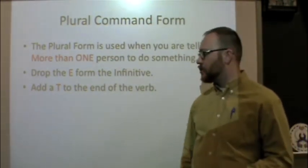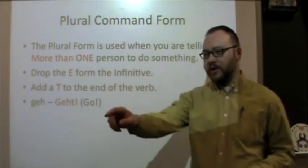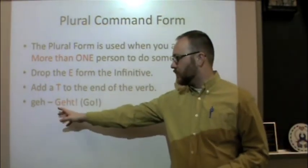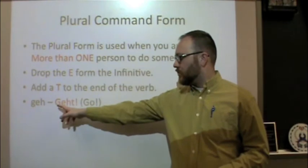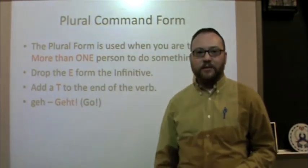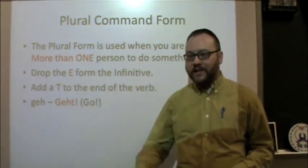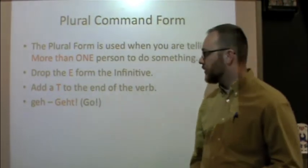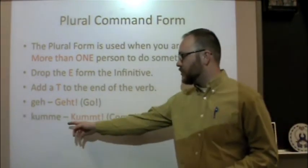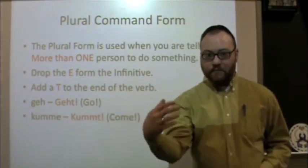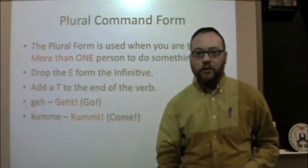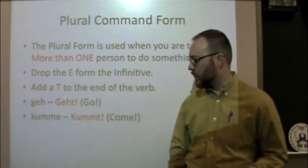So if we stick with those two same verbs, if we're telling three people to go, we take the verb, drop the E, add a T: 'gate.' Or let's use the verb 'kumme' — 'come.' Drop the E, add a T: 'kommt.' If there was other stuff like 'go home,' that other stuff would come behind the verb — that doesn't change.